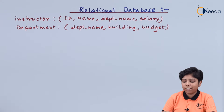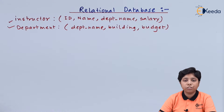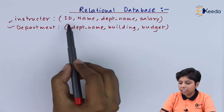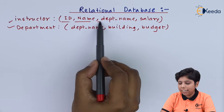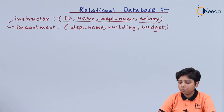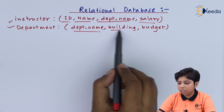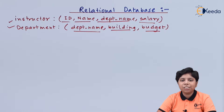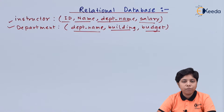Here we can see two relations or tables: one is the instructor table and the other is the department table. The instructor table contains attributes: ID, name, department name, and salary. The department table contains: department name, building, and budget. This relational database is mainly concerned with the record-based model, also called the relational model.